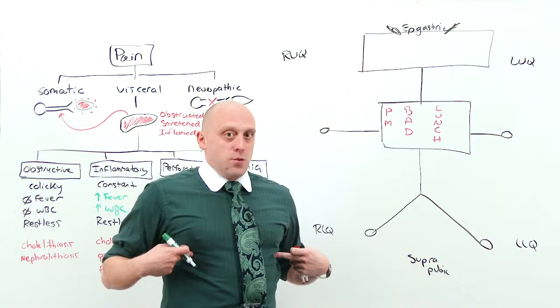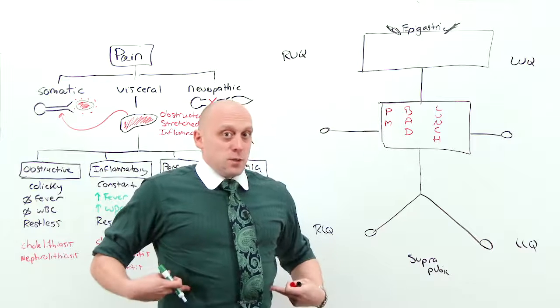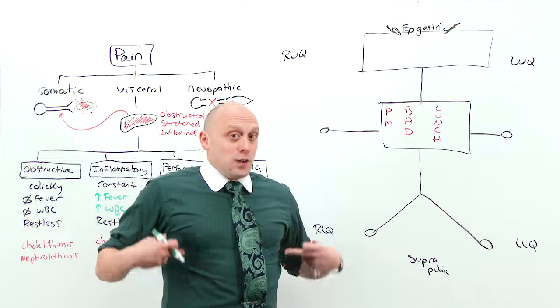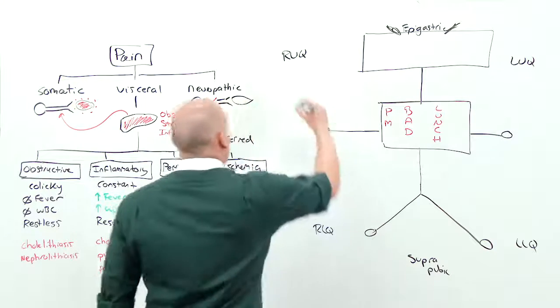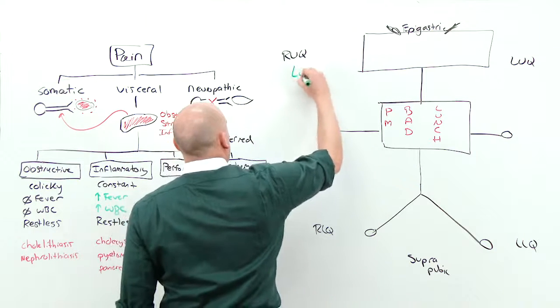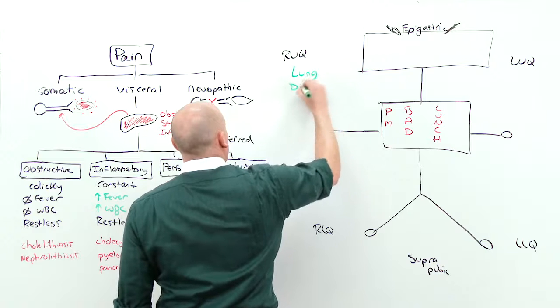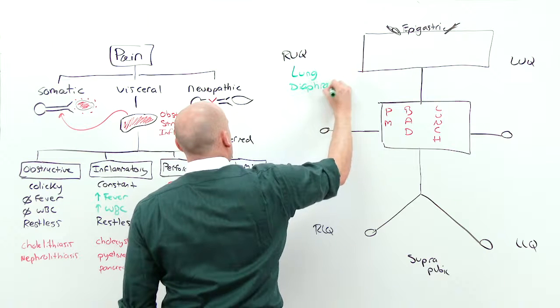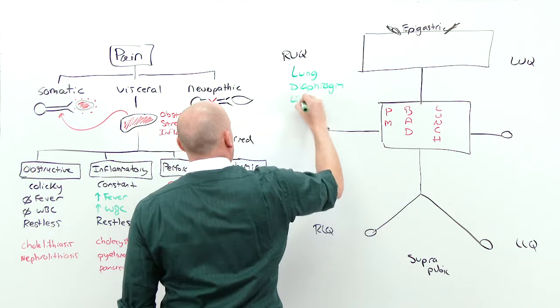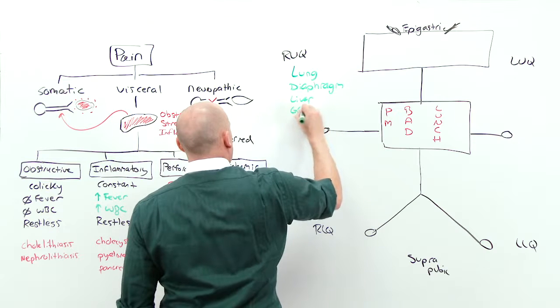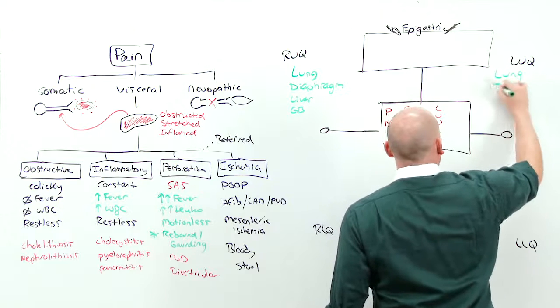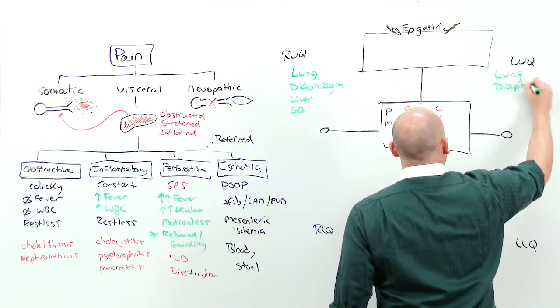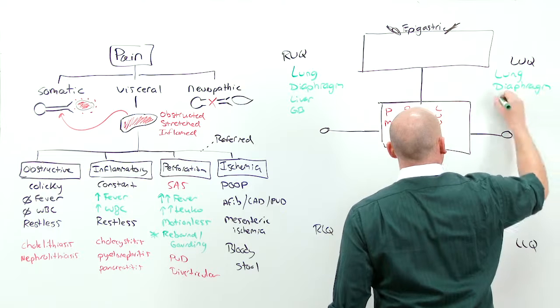What I want to do is create the organs into the sections that you should consider. Abdomen starts at T4. Take a big deep breath. Lungs go into the abdomen. Exhale it all out. The liver comes up into the chest. So start with the lungs and work your way down. In the right upper quadrant, you should consider the lung, diaphragm, liver, and gallbladder. Mirror that to the left. You have a lung and a diaphragm, but no liver or gallbladder. Instead, you have a spleen.